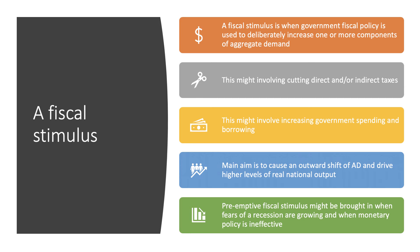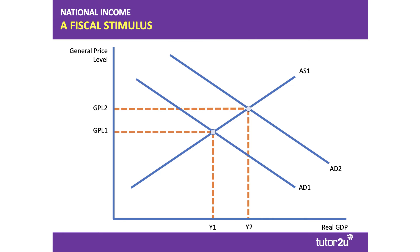Germany, for example, is considering a fiscal stimulus package including more generous subsidies for electric cars, subsidies for climate-friendly real estate renovations, and investment in new rail infrastructure. All of these in theory offer the prospect of a fiscal stimulus. If the stimulus is effective, all you need to show in your diagram is an outward shift of aggregate demand causing a stimulus to aggregate supply. The evaluation challenge is whether this will work, but the key skill here is using the diagram to earn marks.